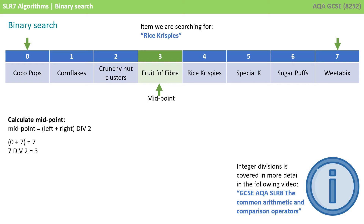We then need to calculate a midpoint. This is done by adding the left pointer, 0, to the right pointer, 7. The answer is 7, which we now divide by 2 to find the middle. We need the answer to be a whole number, so instead of a regular division, we can use what is called an integer division instead. With integer division, only a whole number is returned with no rounding, so 7 divided by 2 is 3, and that's our midpoint.